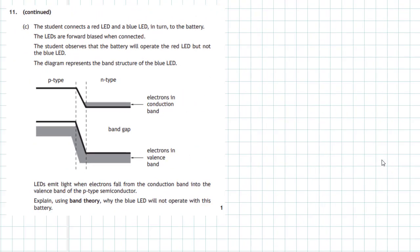Question 11c: the student connects a red LED and a blue LED in turn to the battery. The LEDs are forward biased when connected. The student observes that the battery will operate the red LED but not the blue LED. The diagram represents the band structure of the blue LED. LEDs emit light when electrons fall from the conduction band into the valence band of the p-type semiconductor. Explain using band theory why the blue LED will not operate with this battery.